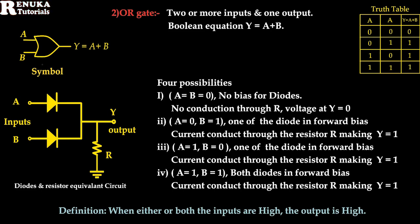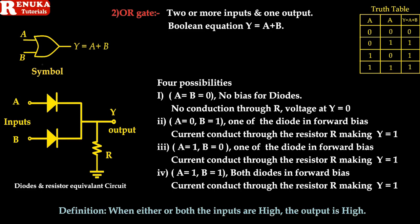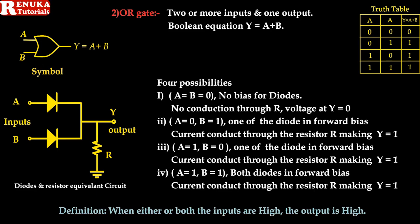With two inputs and binary levels applied, there will be four combinations possible. First, if A and B are both low, both diodes will be in reverse bias and at the output we will get 0. If one of the inputs is connected to plus Vcc, that diode will be forward biased and the output will be 1. Similarly, if both inputs are high, both diodes will be forward biased and we will get high at the output. We can define it as: if either or both inputs are high, the output is high.